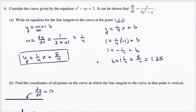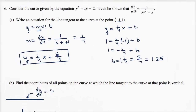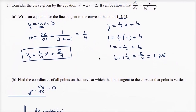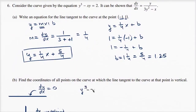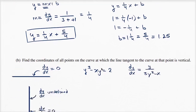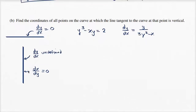We were given the equation of the curve and also told what dy/dx is. The equation of our curve is y³ − xy = 2, and dy/dx = y / (3y² − x). One thing we can do is figure out the derivative of x with respect to y and set that equal to zero. So dx/dy is just the reciprocal of dy/dx, which gives us (3y² − x) / y.